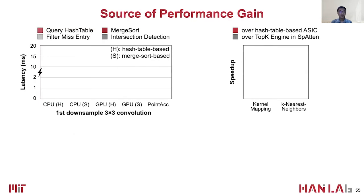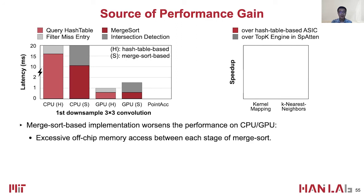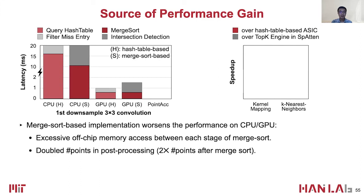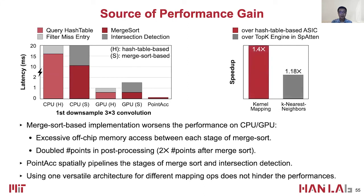To explore the source of performance gains for Point Tech, we first break down the runtime latency of mapping operations in the point cloud convolution. On CPU and GPU, our merge-sort-based conversion for kernel mapping actually worsens the performance because of excessive off-chip memory access for intermediate data in the merge-sort and the doubled point cloud size during post-processing. However, Point Tech specially pipelines the stages of merge-sort and intersection detection, so the overhead is cancelled. Furthermore, Point Tech runs 1.4x faster on kernel mapping over hash table-based ASIC implementation, and 1.18x faster on k-nearest neighbor over quicksort-based top-k engine in previous work.